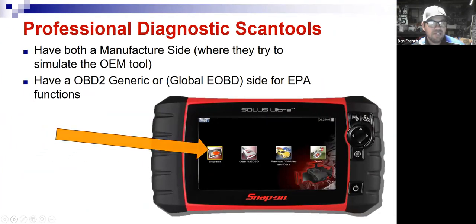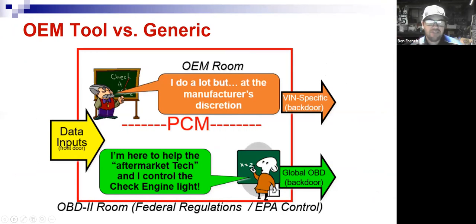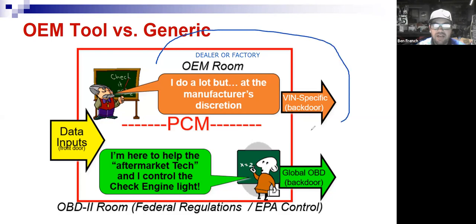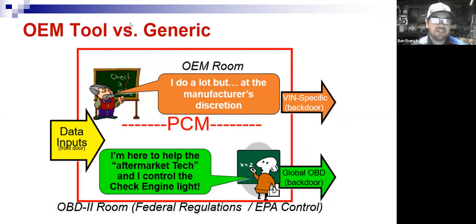So now we know about the different types of tools: our little ELM interface is a do-it-yourselfer type, while factory OEM tools do whatever the manufacturer wants. Generic OBD2 tools conform to federal regulations. I'll often use both sides — generic and manufacturer-specific — together to help diagnose the car.